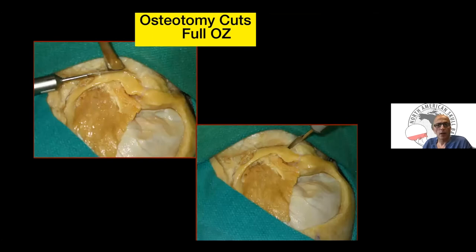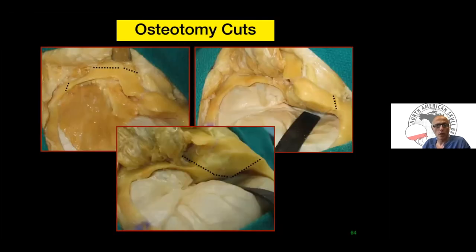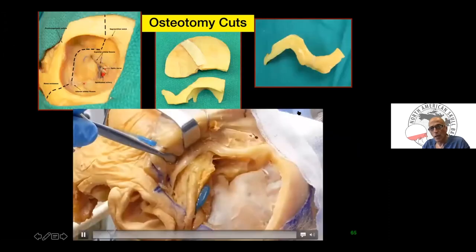The other cuts are at the malar eminence and the superorbital bar. When using the reciprocating saw, you should hold it to maximize your exposure rather than at a limiting angle. The osteotomy cuts are summarized as: cut at the root of the zygoma, malar eminence, roof of orbit, and the superorbital bar.